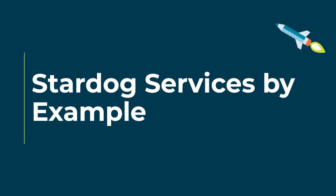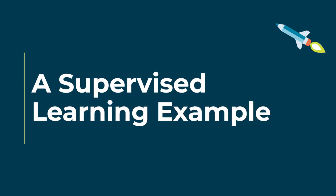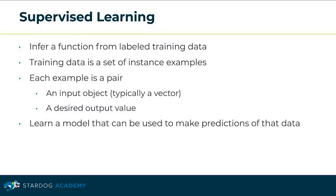Let's look closer into some machine learning examples using Stardog services. We will first focus on a couple of supervised learning examples. Supervised learning is a machine learning task of learning a function that maps an input to an output based on example input-output pairs. It infers a function from labeled training data consisting of a set of training instance examples, where each example is a pair of an input object — typically a vector — and a desired output value. This allows us to learn a model that can be used to make predictions on new data.